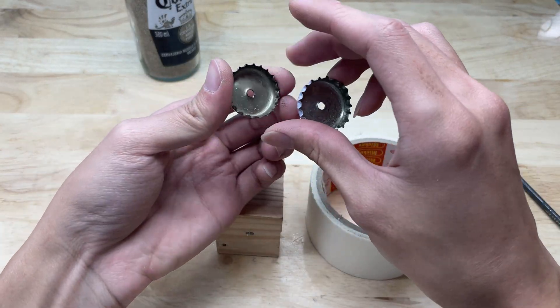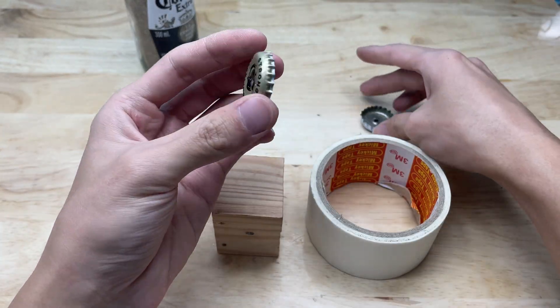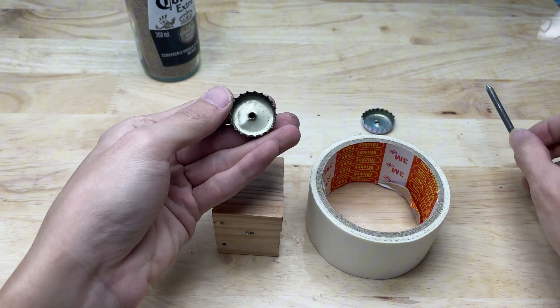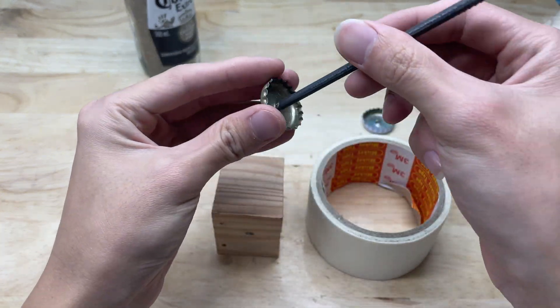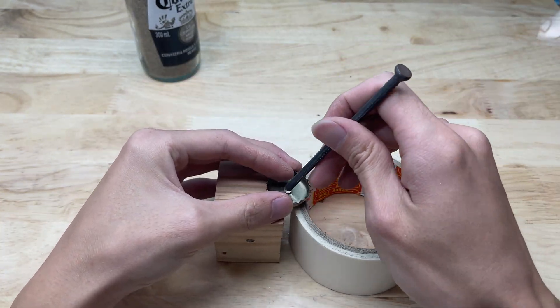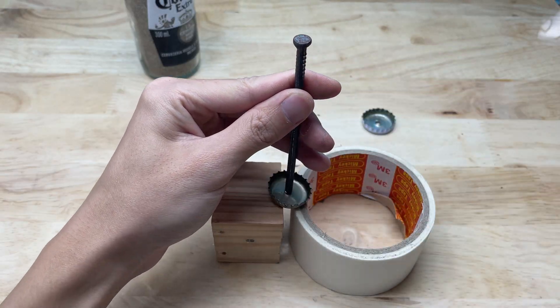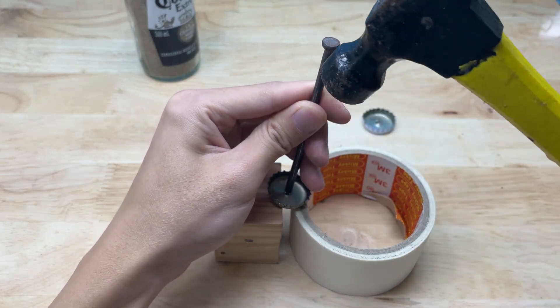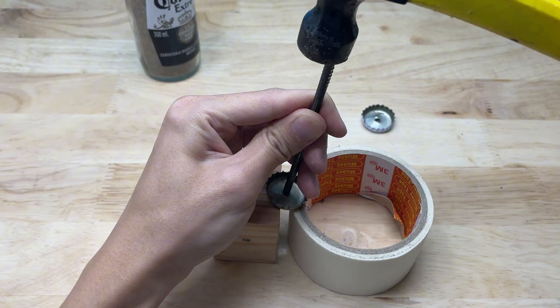Then I insert the sharpened nail through the hole in the bottle cap, making sure the pointed end faces outward and stays aligned with the center axis. When positioned correctly, the nail passes straight to the center of the cap, looking like a purpose-built component, neat, well-aligned, and secure.